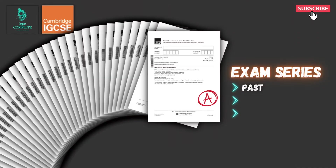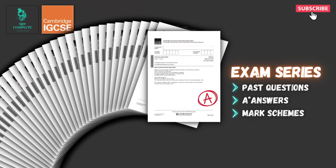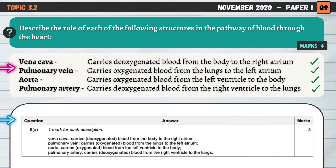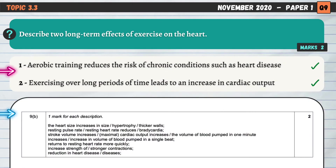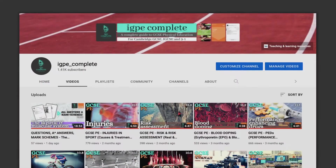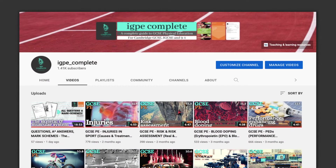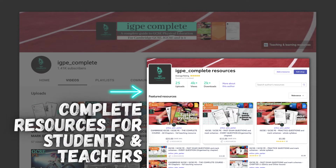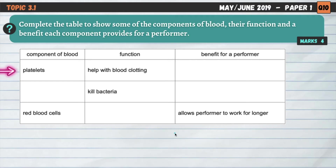Hello and welcome to another complete Cambridge IGCSE PE lesson. In this video, we'll break down and simplify eight recent past exam questions on Chapter 3, The Circulatory System. If you enjoy this video, consider subscribing to the channel, give the video a thumbs up, and visit my channel page for short summary videos and my resource store by clicking on the link in the description for complete revision and teaching materials. Let's begin.